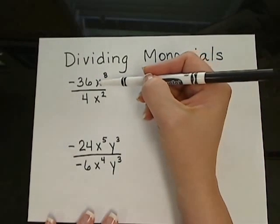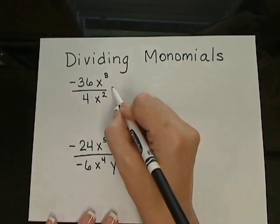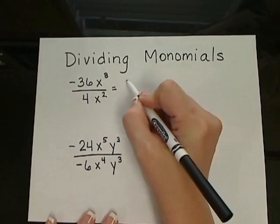So in our first example here, we're going to divide the negative 36 and the 4. Negative 36 divided by 4 would give me negative 9.